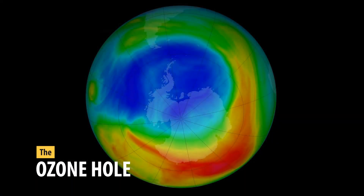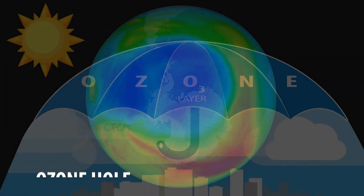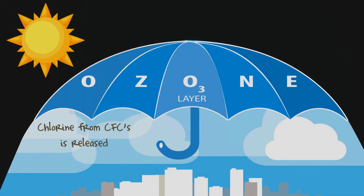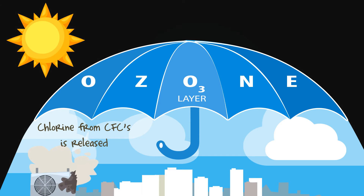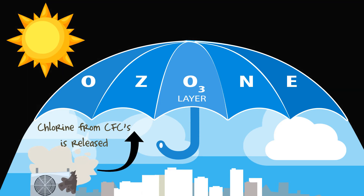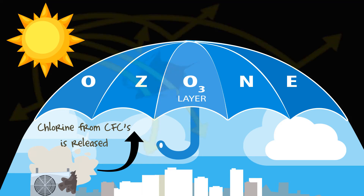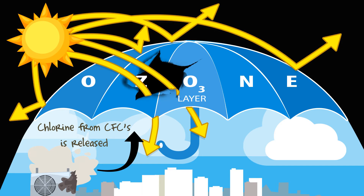Next we look at the ozone hole. Chlorine from chlorofluorocarbons, or CFCs, is released from discarded or leaky air conditioners. Chlorine rises to the stratosphere and acts as a catalyst to break down ozone.